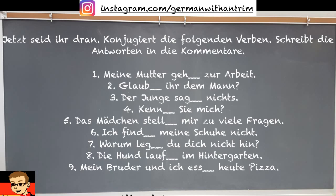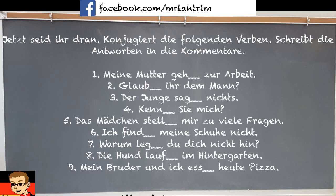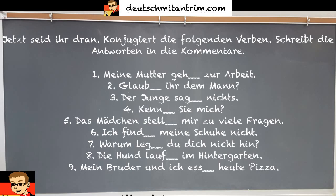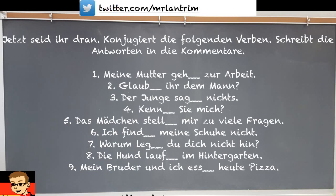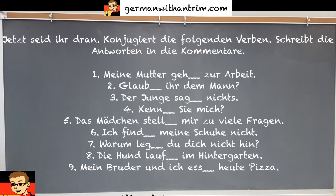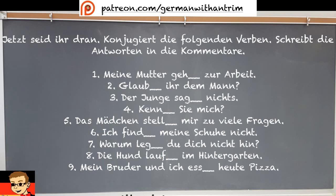Number 7 — 'Warum legst du dich nicht hin?' Why don't you lie down? Question word first, then '-st' for 'du.' There's a typo — it should be 'Die Hunde.' Number 8 — 'Die Hunde laufen im Hintergarten.' The dogs are running in the backyard. 'Die Hunde' is plural, so the verb gets '-en.' Number 9 — 'Mein Bruder und ich essen heute Pizza.' My brother and I are eating pizza today. The compound subject = 'wir,' verb gets '-en.' Time 'heute' comes before the direct object 'Pizza.'